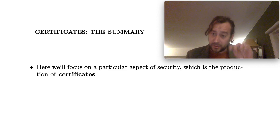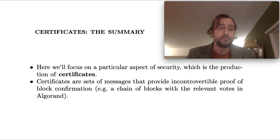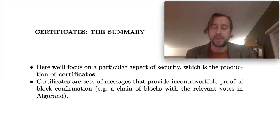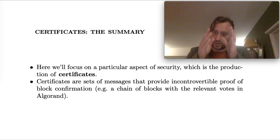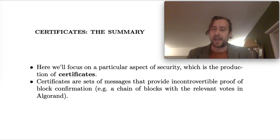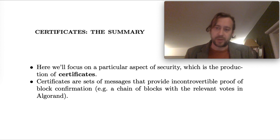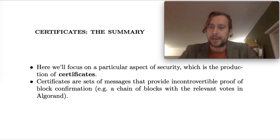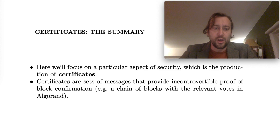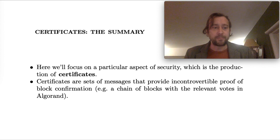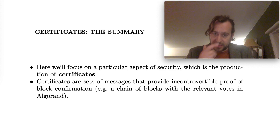Here we're going to be focusing on a particular aspect of security, which is the production of what we'll call certificates. Certificates are sets of messages whose existence provides incontrovertible proof of block confirmation. Bitcoin doesn't produce certificates because the existence of a certain chain doesn't prove that there couldn't exist a different, longer, incompatible chain. On the other hand, most BFT-style protocols, if implemented in the permissionless setting using proof of stake, will produce certificates. For example, in Algorand, if you see a chain of blocks with all the relevant votes for the blocks in that chain, then you can know those blocks have been confirmed.